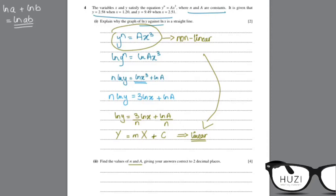Then, find the values of n and a, giving your answers correct to two decimal places. For this, we will use what's given to us.